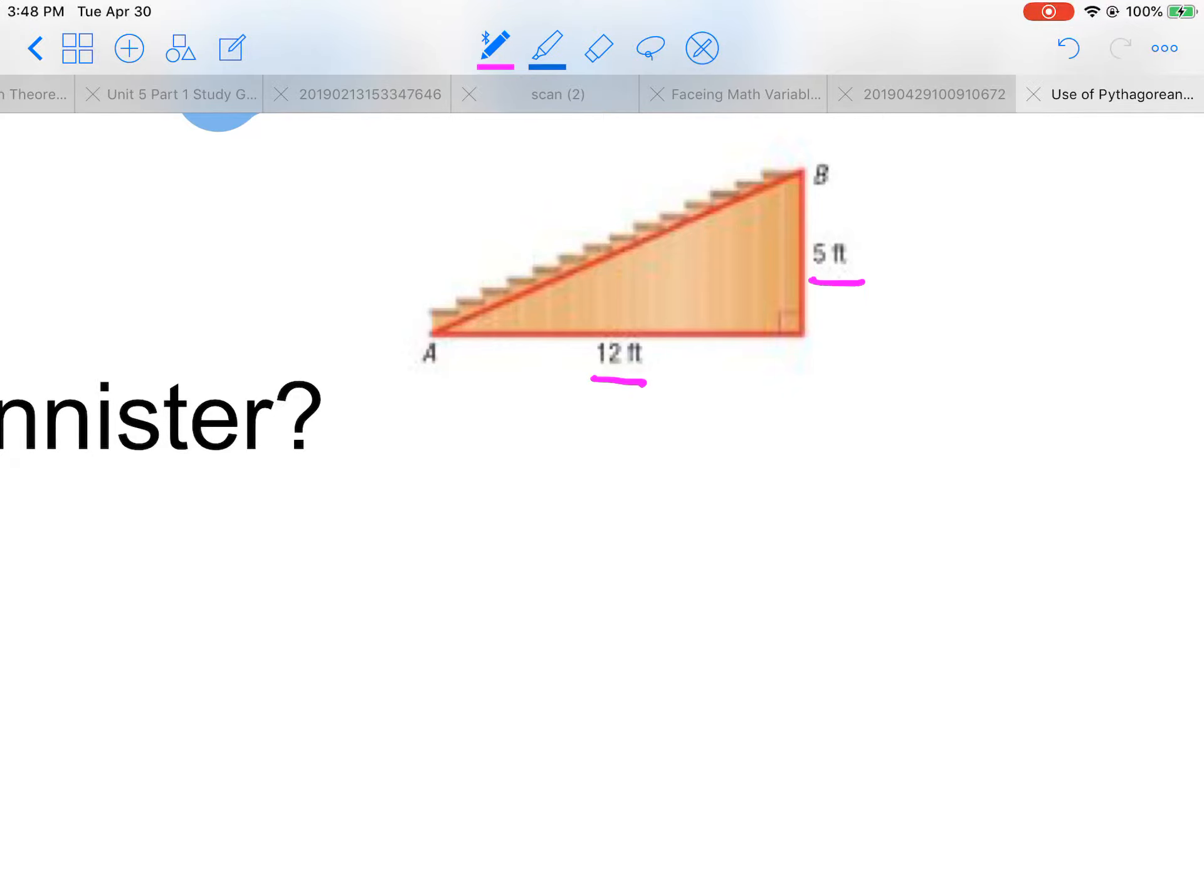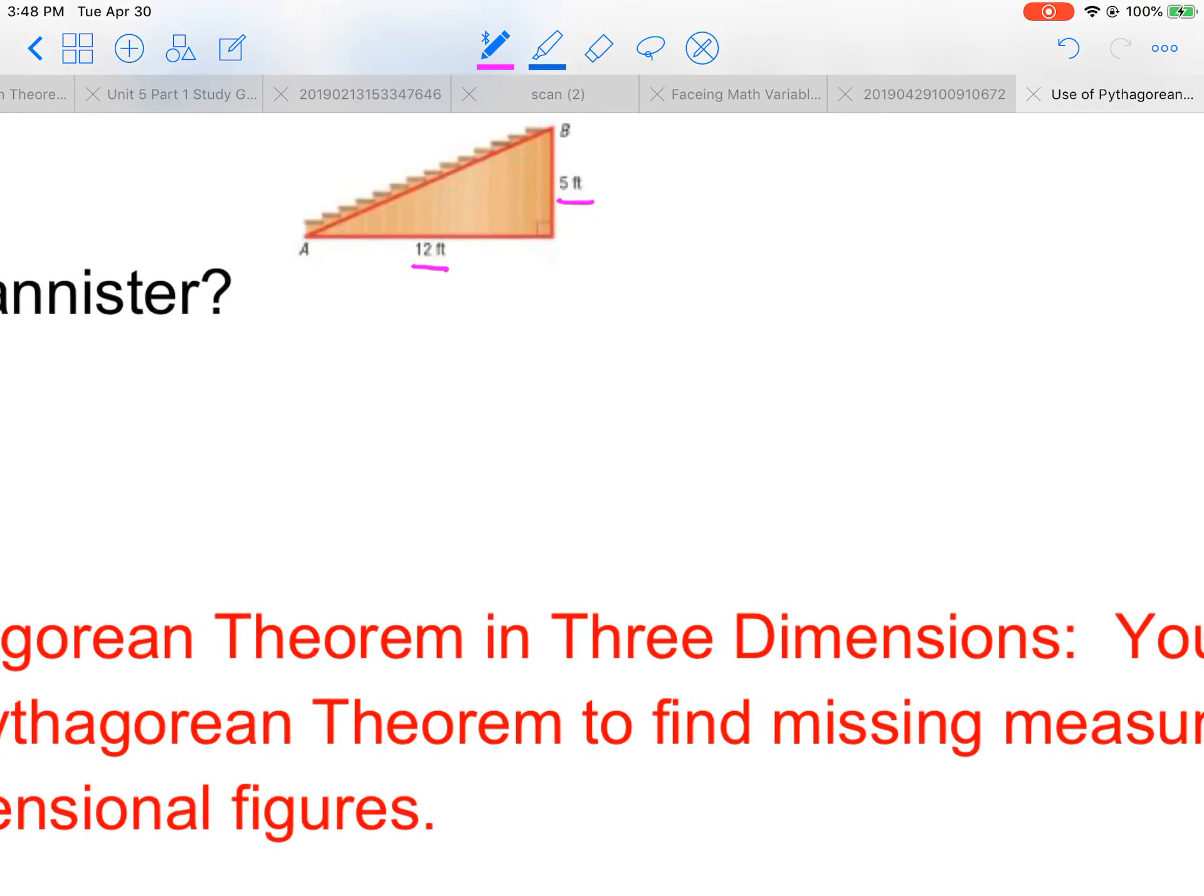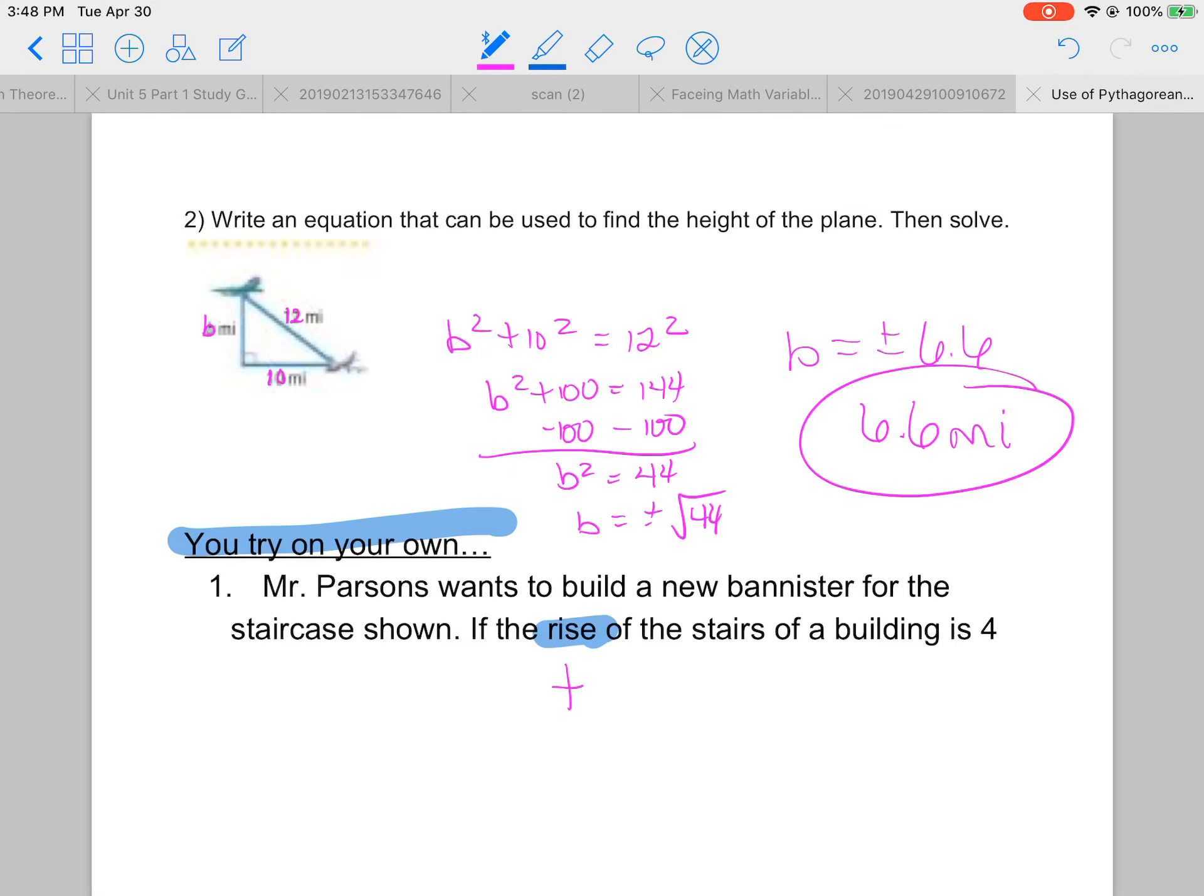So we can look here and see that this was our run, 12. This was our rise, 5. Oh, I guess the problem says 4, but it's really a 5 in the... So the rise should be 5. Let's change that.